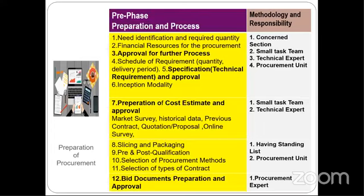In the seventh step, everyone will be able to do the activities of the cost system and the authority will be approved. There is a new step like slicing and packaging.